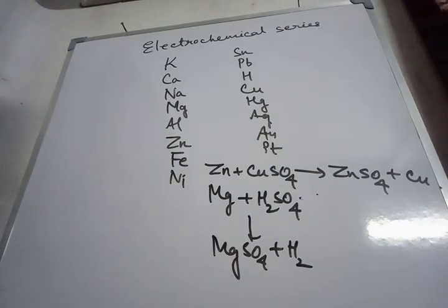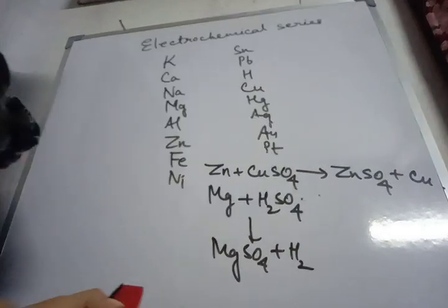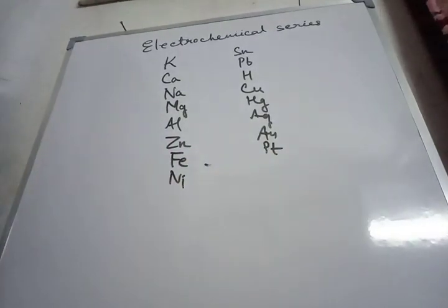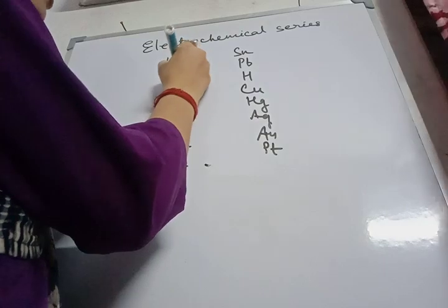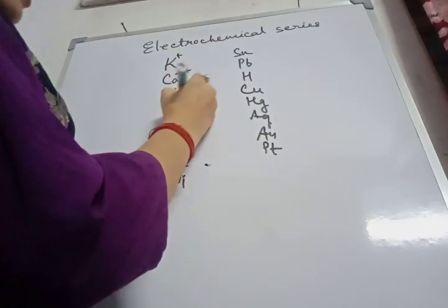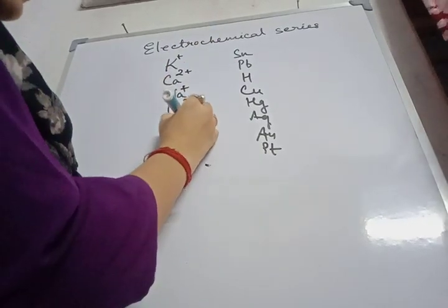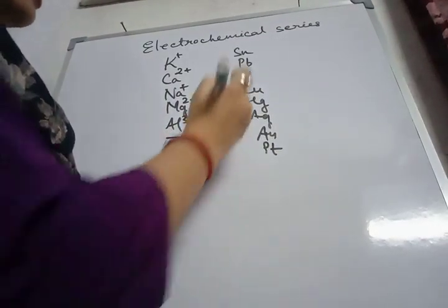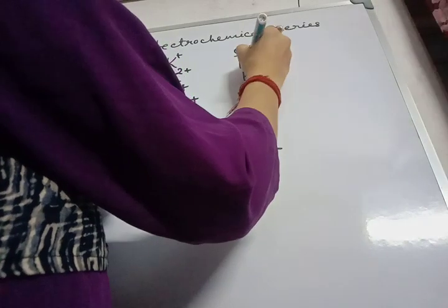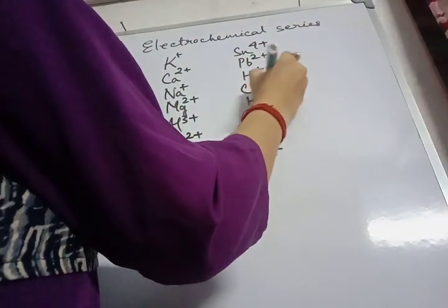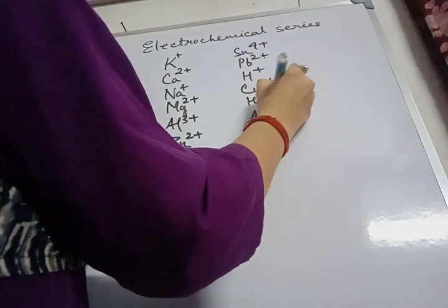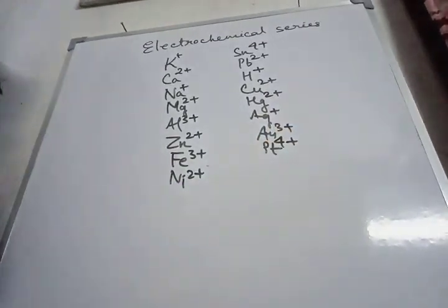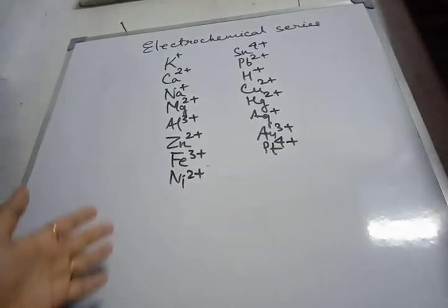Now we will look at the electrochemical series of cations. The series is the same as metals, but with ionic charges added: magnesium 2+, aluminium 3+, zinc 2+, iron 3+, nickel 2+, tin 4+, lead 2+, hydrogen 1+, copper 2+, mercury 2+, silver 1+, gold 3+, and platinum 4+. This represents the electrochemical series of the cations.